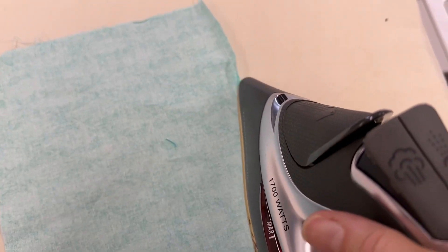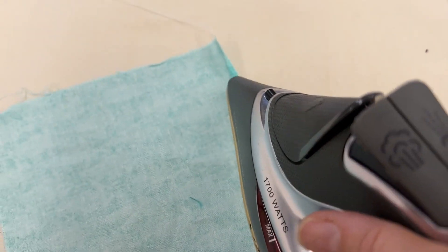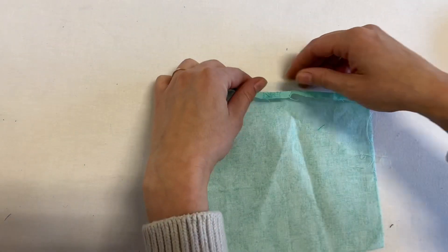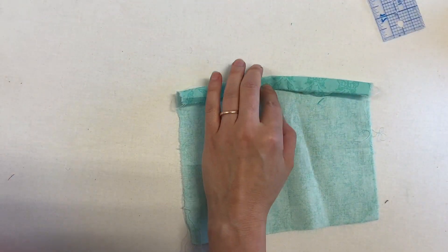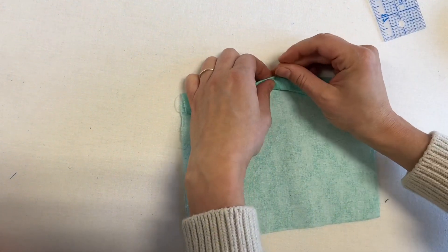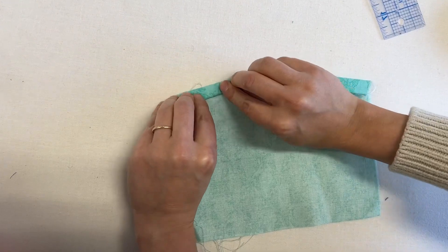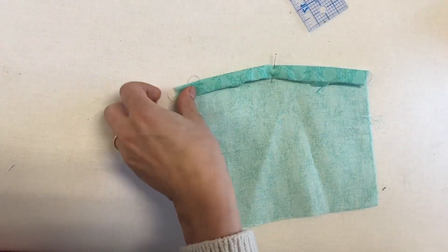Clip your threads long and then head over to the iron to press the quarter inch seam allowance up. This should be directly on your stitch line. Next you'll fold your fabric up one half inch using a ruler to make sure the distance between the turn of the cloth and the edge of the fabric is one half inch.